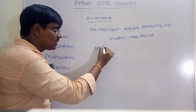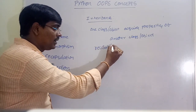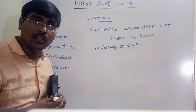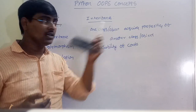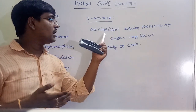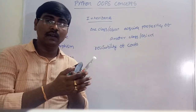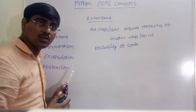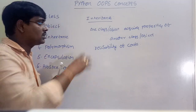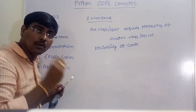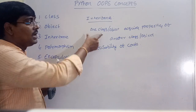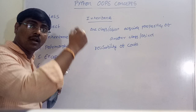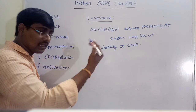The main advantage of inheritance is reusability of the code. In inheritance we have many types: single-level inheritance, multiple inheritance, multi-level inheritance, and hybrid inheritance. We will discuss all those types in a later section.